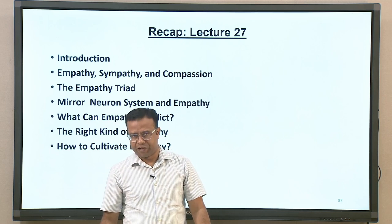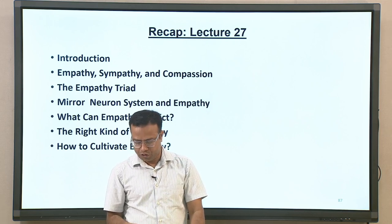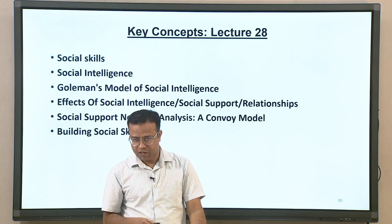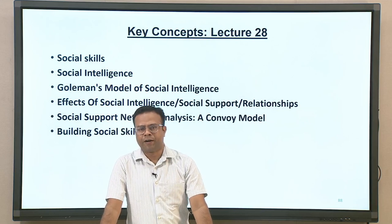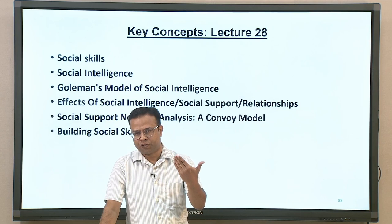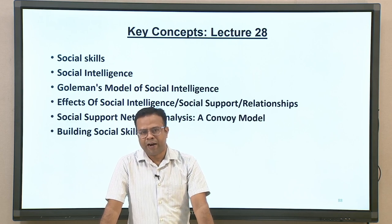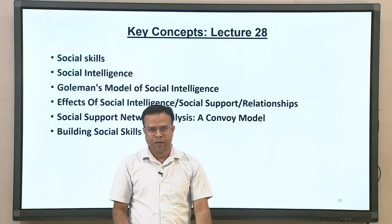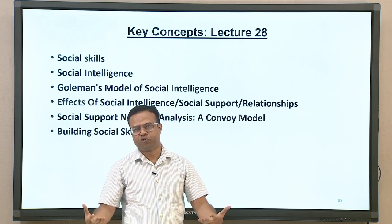We discussed important positive behaviors predicted by empathy, and distinguished the right kind of empathy, since empathy can lead to compassion fatigue. We discussed self-oriented and other-oriented perspectives and their different impacts. We also covered how to cultivate empathy. Today we will talk about social skills and social intelligence as an important part of emotional intelligence, including Goleman's model of social intelligence, the impact of social support on health and well-being, the Convoy model, and how to build social skills.